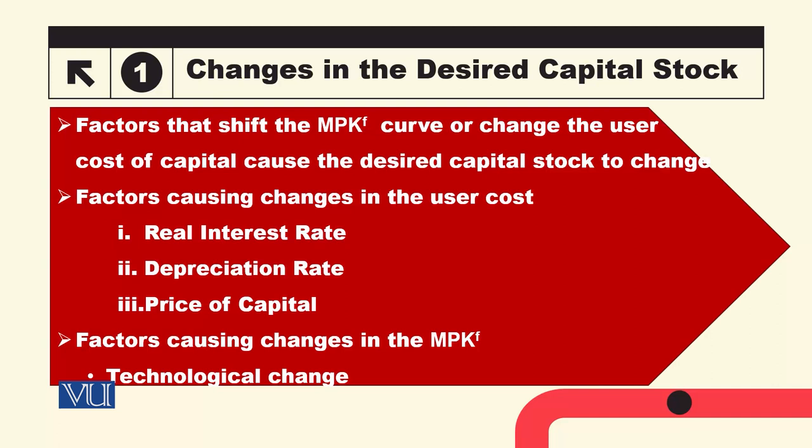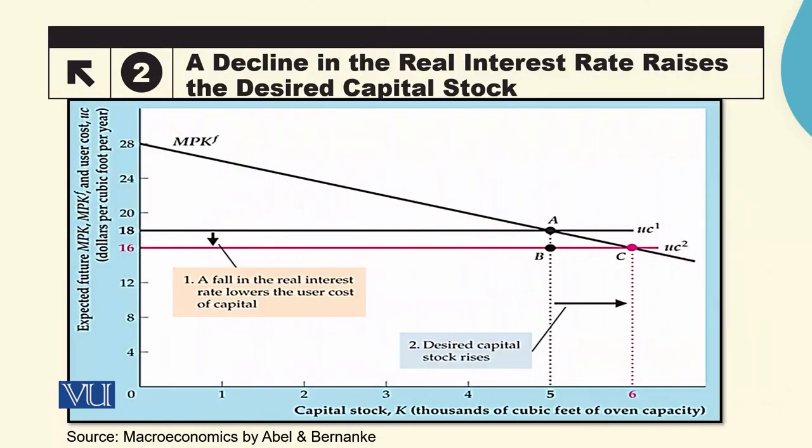اگر کیپیٹل کی پروڈکشن فنکشن میں اضافہ ہو تو اس سے بھی ڈیزائرڈ لیول آف کیپیٹل سٹاک چینج ہو جائے گی۔ گرافیکلی اگر ہم اس بات کو سمجھنا چاہیں تو پہلا ہم کیس لے رہے ہیں جس میں یوزر کاسٹ چینج ہو رہی ہے، اور یہ چینج ریال انٹرسٹ ریٹ میں کمی کی وجہ سے ہے۔ باقی چیزیں — پرائس آف کیپیٹل اور ڈیپریشیشن ریٹ — کنسٹینٹ رہتی ہیں۔ انٹرسٹ ریٹ کم ہونے سے یوزر کاسٹ کی جو ہوریزنٹل لائن ہے وہ ڈاؤنورڈ شفٹ ہو جائے گی۔